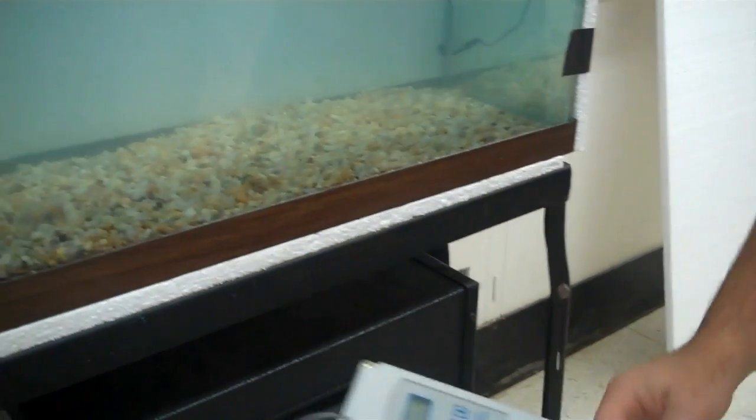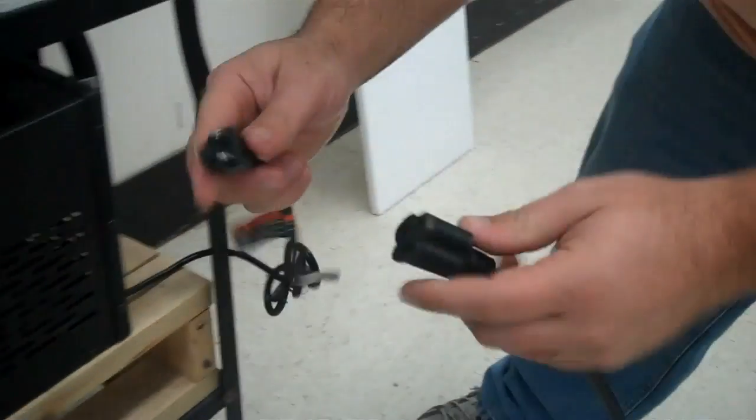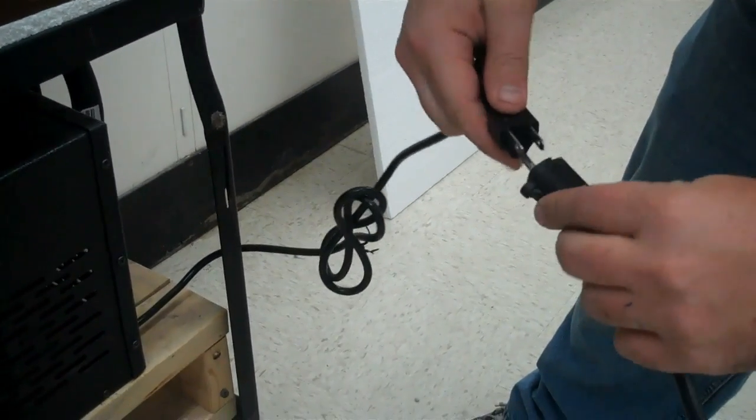So the temperature sensor goes into this. You plug this in to the chiller. My chiller actually has kind of a long cord, but you plug it in there. This part goes, obviously, to the power.